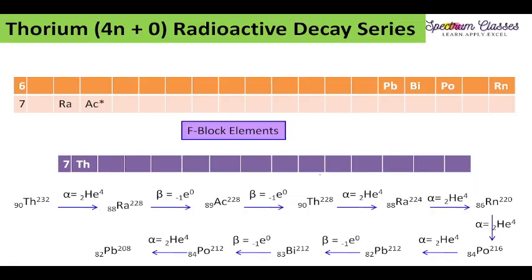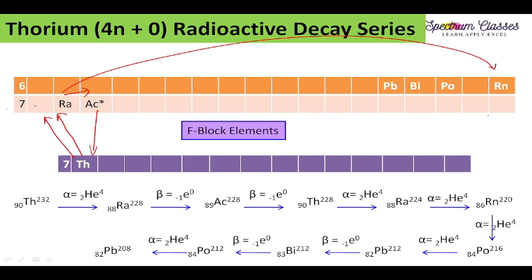I am also going to show you how to memorize it element by element. From thorium to radium (alpha), radium to actinium (beta), actinium to thorium (beta), thorium to radium again (alpha), then radium to radon (alpha), radon to polonium (alpha), polonium to lead (alpha), lead to bismuth (beta), bismuth to polonium again (beta), and polonium to lead (alpha). This is the simplest route through which this radioactive disintegration series proceeds.